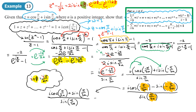Now we can cancel: sin(π/2n) over sin(π/2n) becomes 1, and i·cos(π/2n) over sin(π/2n) becomes i·cot(π/2n). So the result is 1 + i·cot(π/2n) — which is what was required.